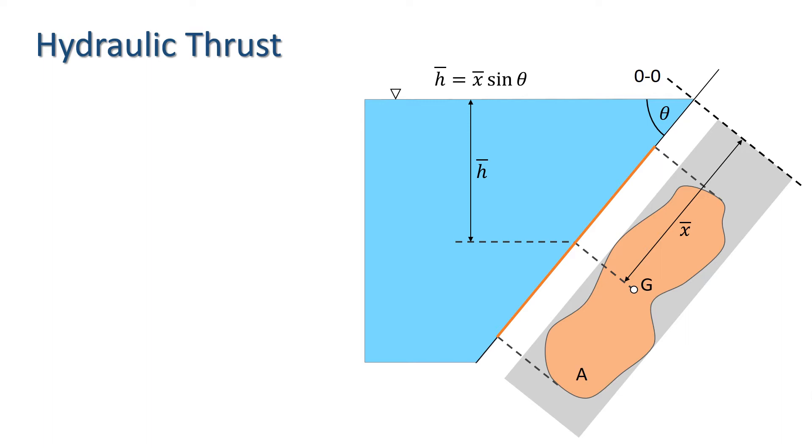Consider an elementary area dA, which is a distance X from OO, and has a corresponding pressure head of H. And let dF be the elementary force acting on dA. We have H equals X sine theta, and dF is pressure times area, which gives us rho G H dA.